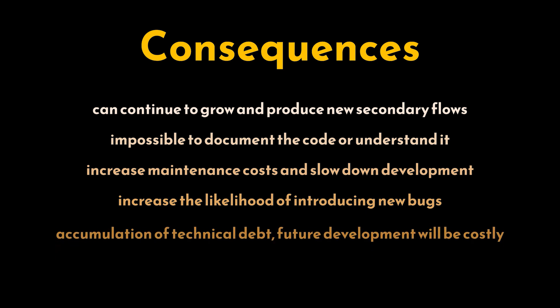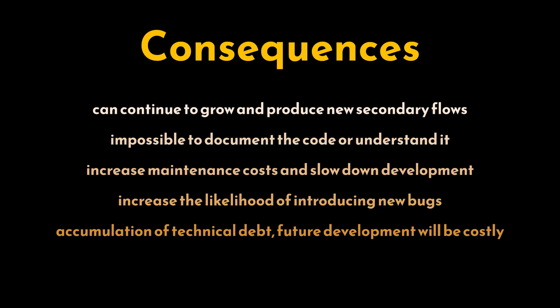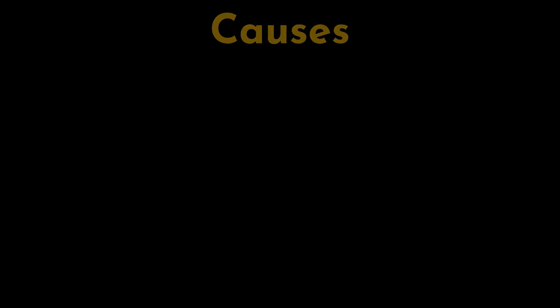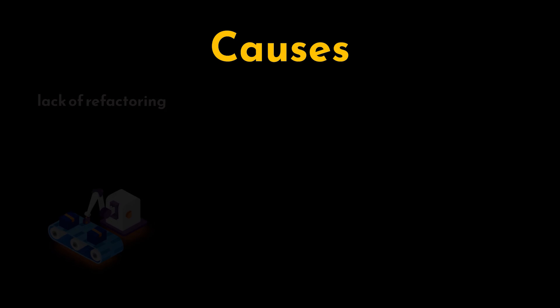This results in the accumulation of technical debt, making future development more costly and challenging. Additionally, working with a messy codebase leads to decreased morale and productivity among developers. So why does this happen? What are the potential causes that may lead to lava flow code?